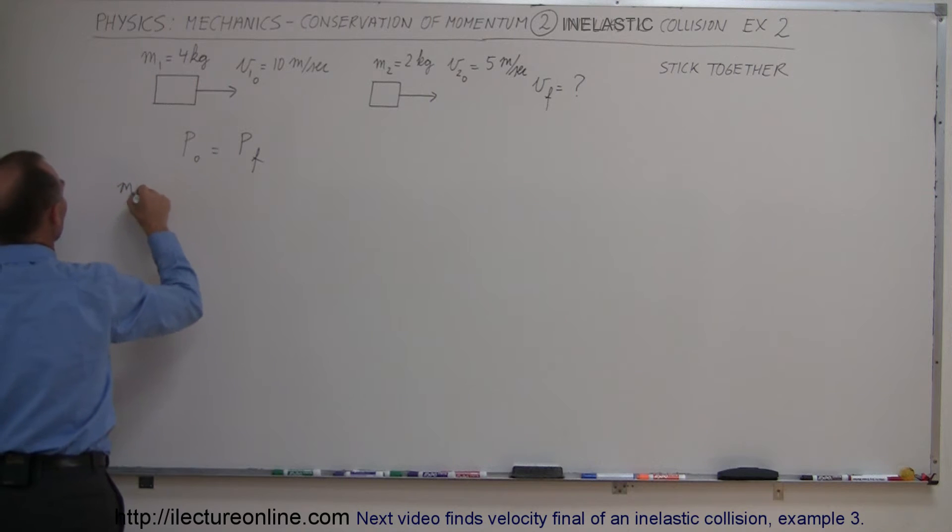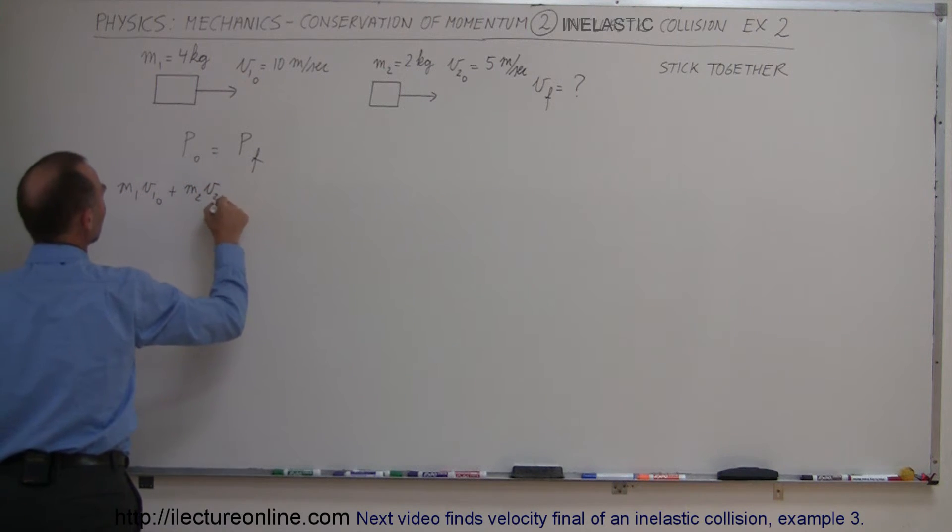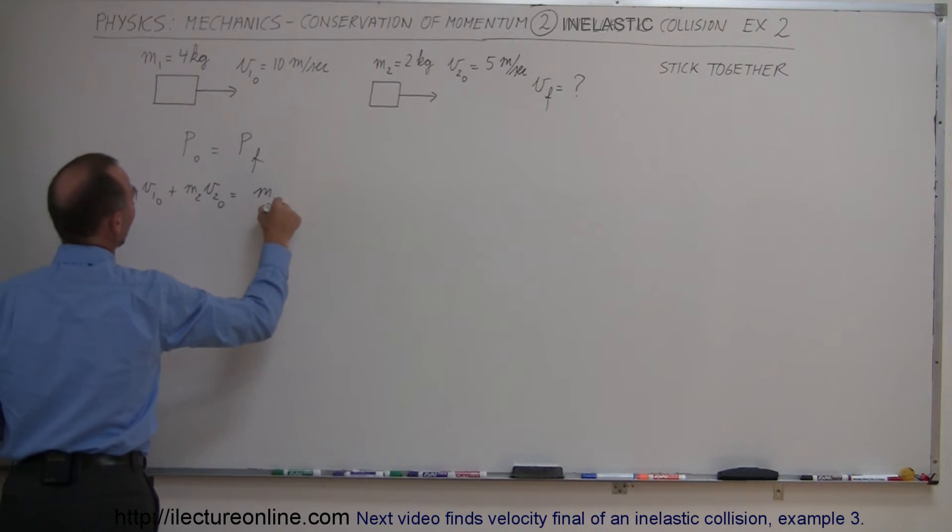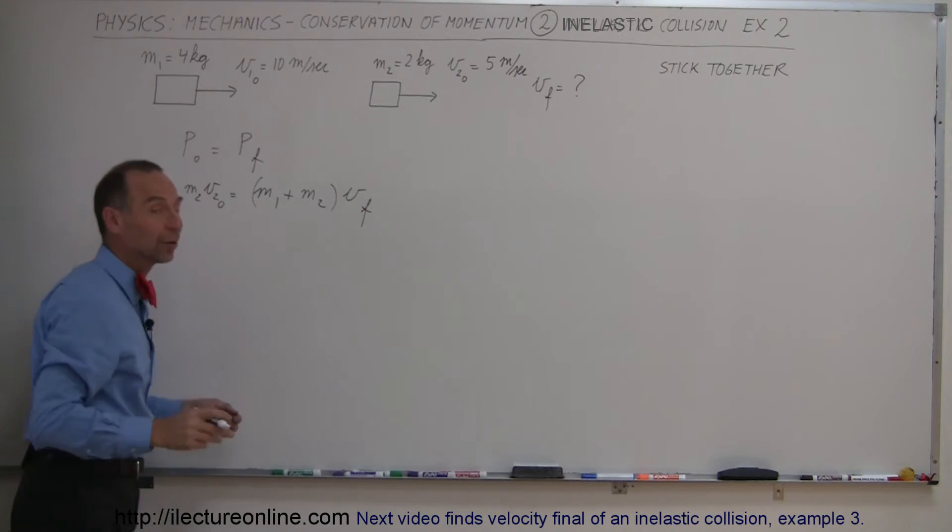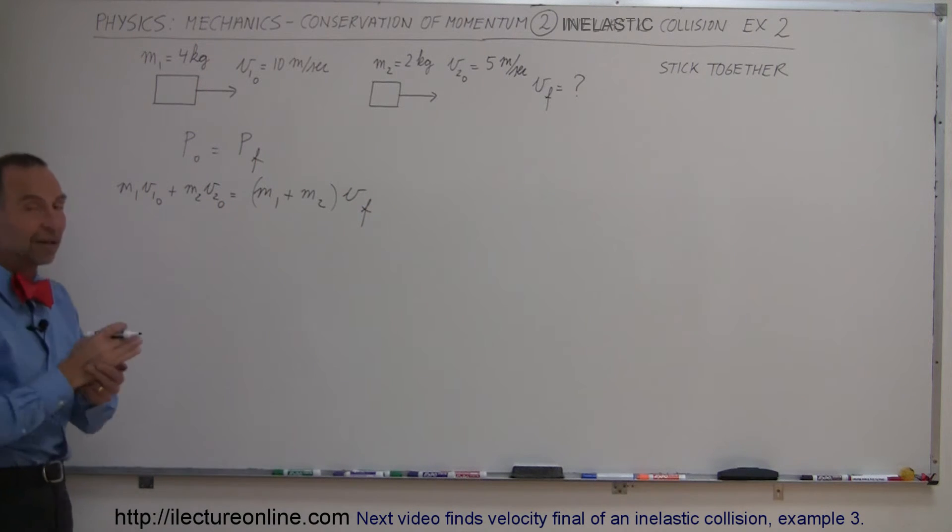And so we can write that m1 v1 initial plus m2 v2 initial equals m1 plus m2, because they stick together, times v final. Remember that the equation for momentum is mass times velocity.